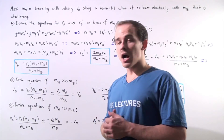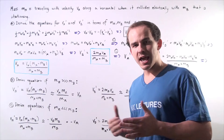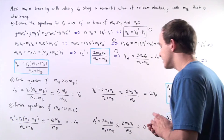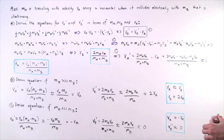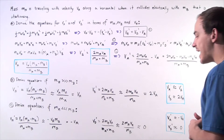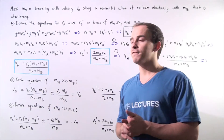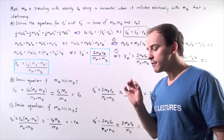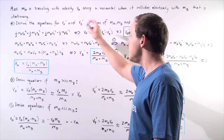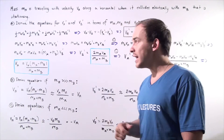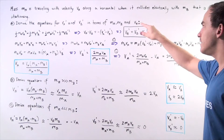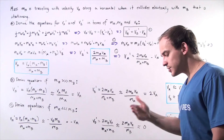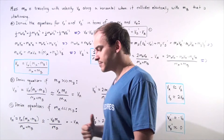Let's suppose I have two objects, object A and object B. Object A with mass MA is traveling with a velocity VA along the horizontal axis, when it collides elastically with the second object that has a mass MB that is stationary. We want to derive the equations for the final velocities of the two objects, VA prime and VB prime, after our collision takes place in terms of MA, MB, and VA.